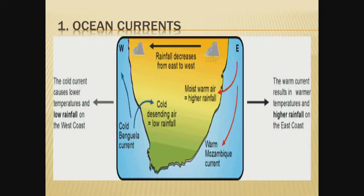Let us start with the ocean currents. On the eastern side of our country we have a warm current, which is the Mozambique current. This influences our climate because on the eastern side we have warmer temperatures, and as a result you have higher rainfall on the eastern side. In contrast, on the western side you have a cold current, which is the cold Benguela current. The effects are lower temperatures and low rainfall on the western side. So the climate of South Africa in terms of rainfall is influenced by ocean currents.